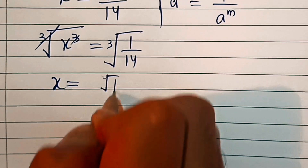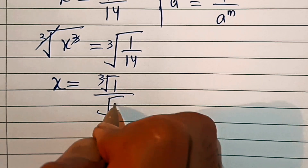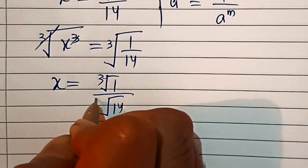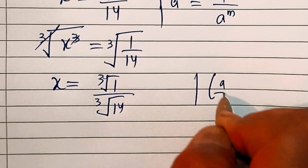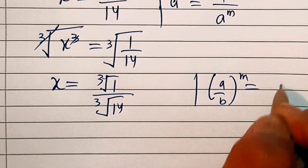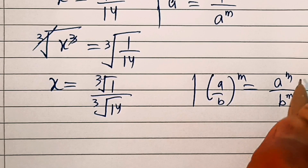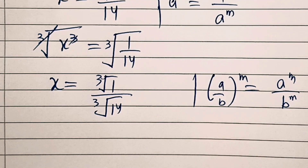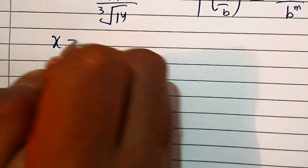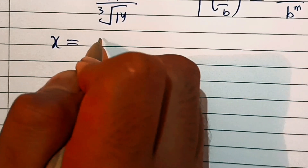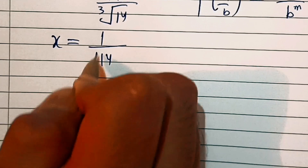We separate the cube root of the fraction using the rule: the cube root of a by b equals the cube root of a divided by the cube root of b. So this is x equal to the cube root of 1, which is 1, divided by the cube root of 14.